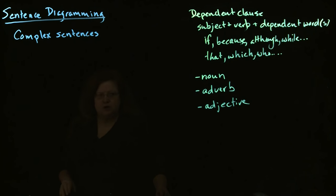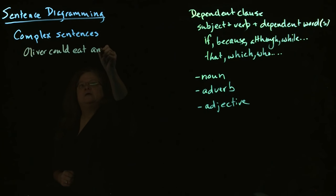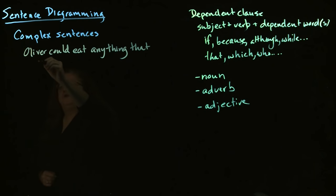So, if we look at a sentence, let's start with one where our dependent clause is going to function as an adjective. We can say, Oliver could eat anything that he wanted.